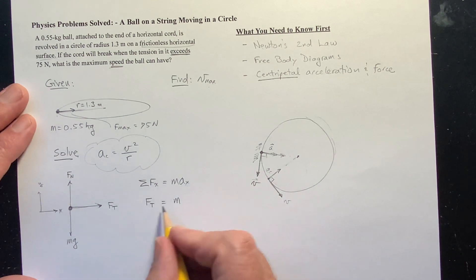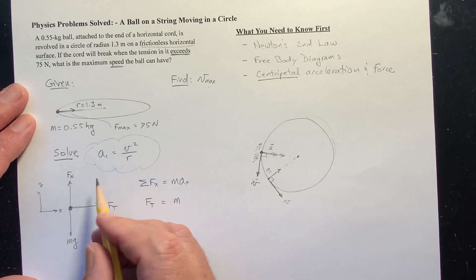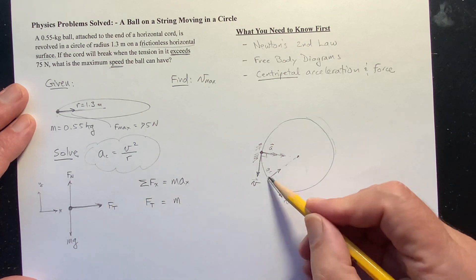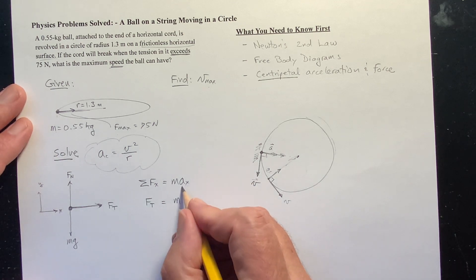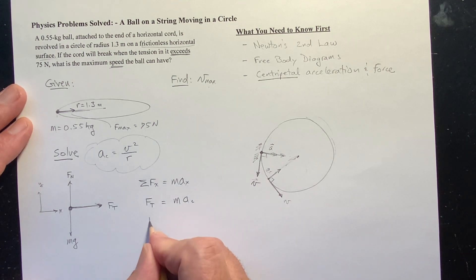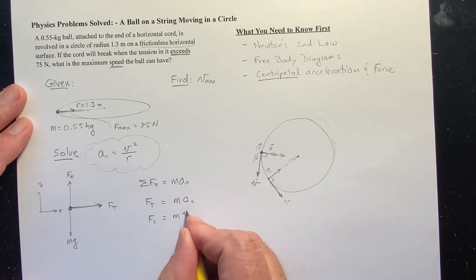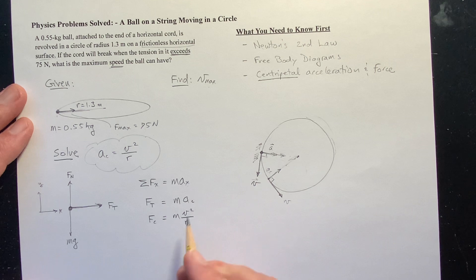So this tension force is changing the direction of the velocity vector with a centripetal acceleration. And so we can say, oh well, this is a centripetal force then. And it's equal to m v squared over r. Now, this is the speed squared. And now I'm going to solve for this.